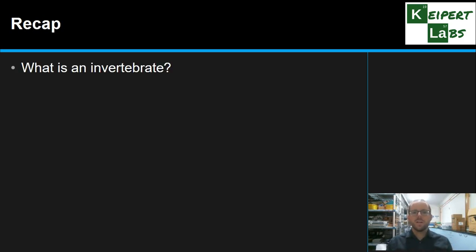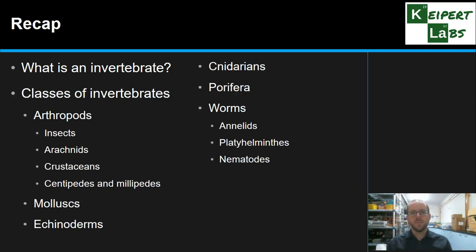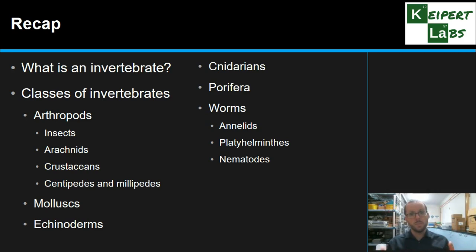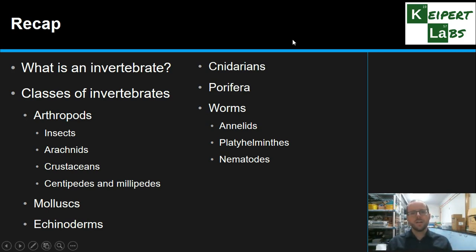So we looked at what an invertebrate is — things that don't have an internal skeleton or backbone, which may have an exoskeleton or no skeleton at all. We looked at arthropods, made up of insects, arachnids, crustaceans, centipedes, and millipedes. We looked at mollusks with soft bodies and hard shells — gastropods, cephalopods, or bivalves. We looked at echinoderms with spiny skin and soft bodies. We looked at cnidarians that can sting and have no skeleton. And porifera — sponges — and worms: annelids, platyhelminths, and nematodes.